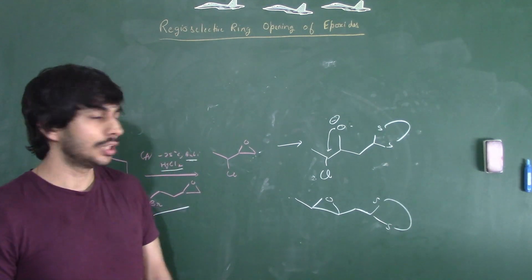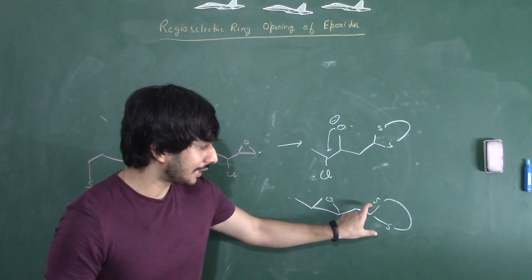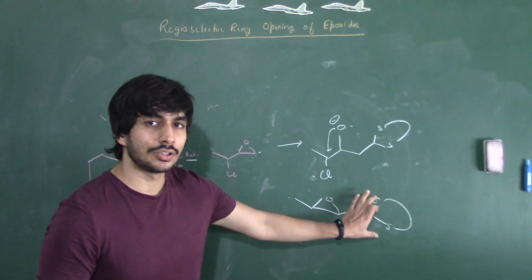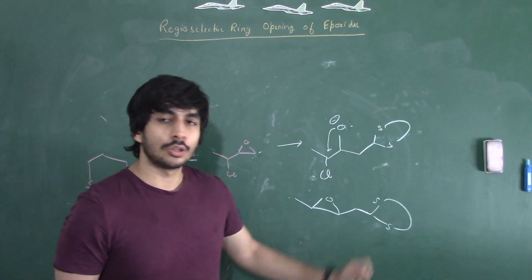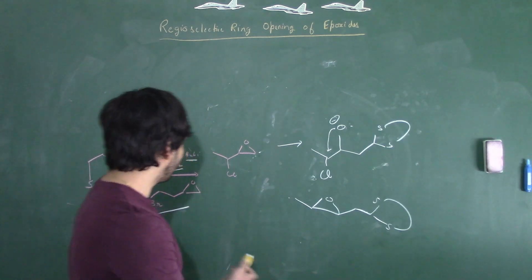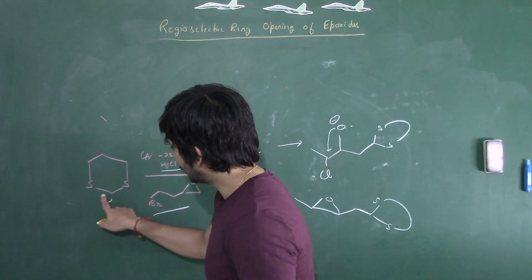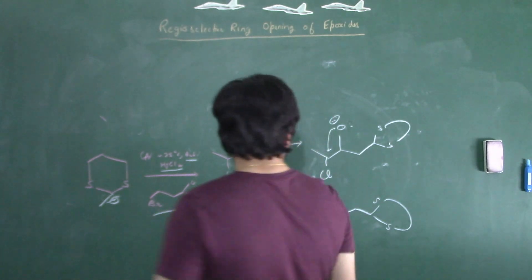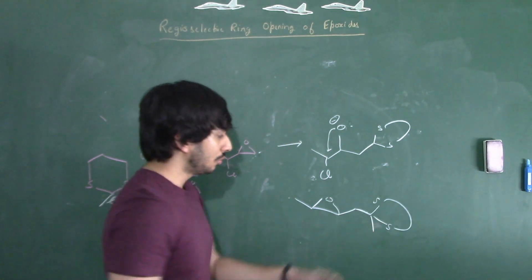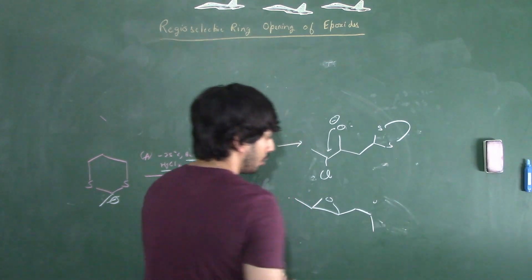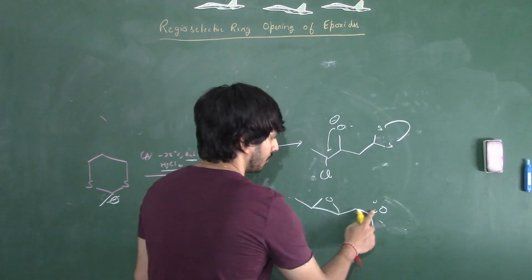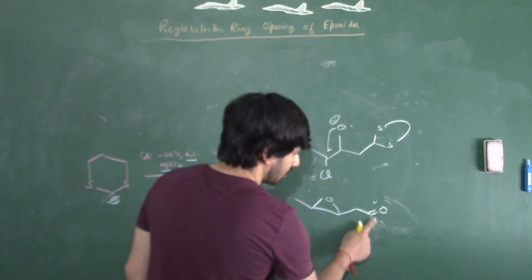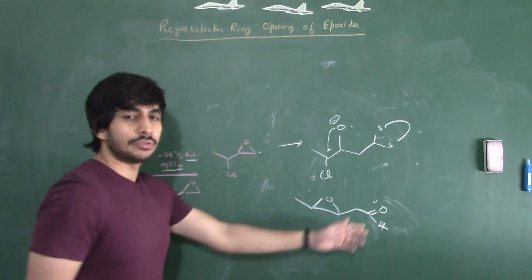Now we are adding HgCl₂. Sulfurs are called mercaptans because they have very strong affinity towards HgCl₂ or mercury. In the presence of HgCl₂, the dithiane will be cleaved — it is actually like a masking agent. If you have studied retrosynthesis, you know that this is a masking agent. When we add HgCl₂, it will convert into a carbonyl. If there were a methyl substituent present, we would get a ketone. But since we have been given a simple dithiane with no methyl, we will get an aldehyde.